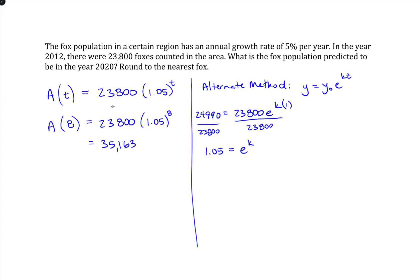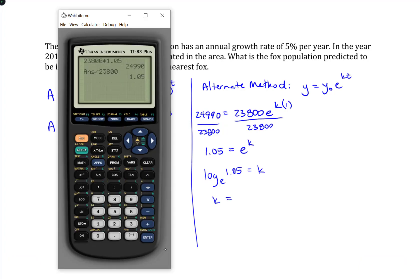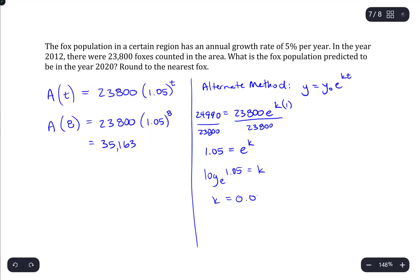So, we need to get k by itself. We're not going to be able to do that unless we change this into a logarithmic equation. So, it would be a log base e of the 1.05 equals k. And, of course, log base e is just the natural logarithm. So, we would do the natural log of 1.05. And, that gives us 0.0488.